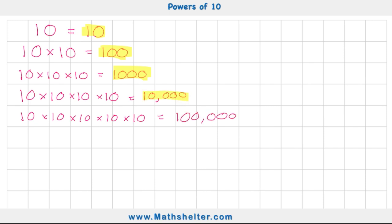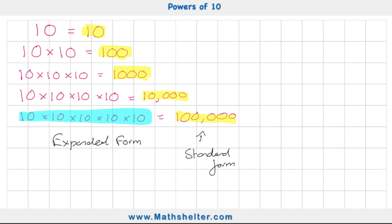This section over here is what we call the expanded form, and then this in yellow is what we call the standard form. All the expanded form is is the breaking down of how many tens we're multiplying together to equal our standard form.